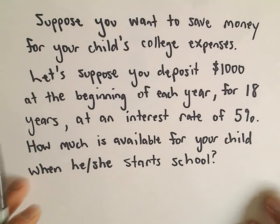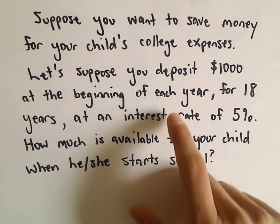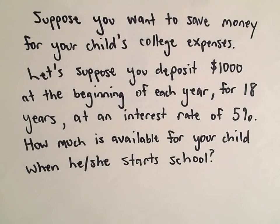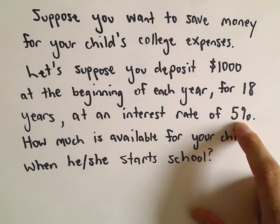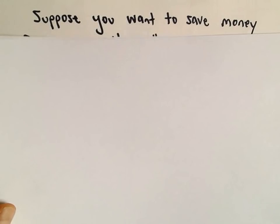So suppose you have a kiddo and you want to save some money for their college expenses, and suppose you decide to deposit $1,000 at the beginning of each year for 18 years, and you're getting an interest rate of 5% on your money. We want to know how much money is going to be available for your child when he or she heads off to school.